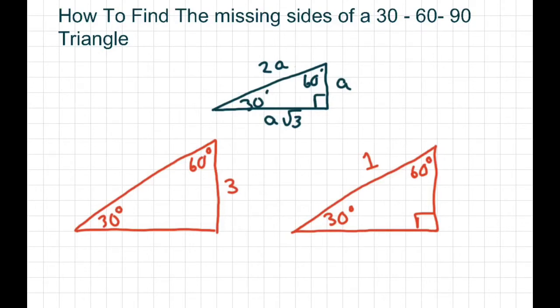This is your formula for it. The side across from 30 degrees is A, the side across from 60 degrees is A square root of 3, and the side across from 90 degrees is 2A.